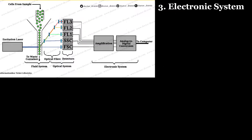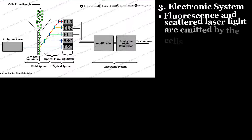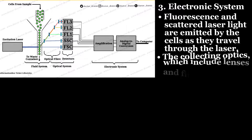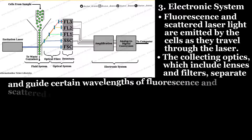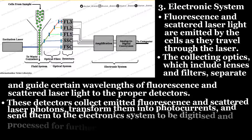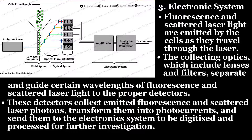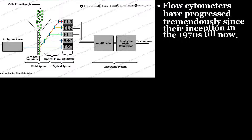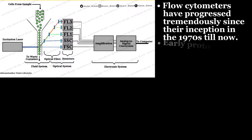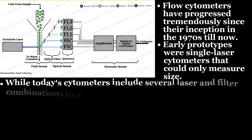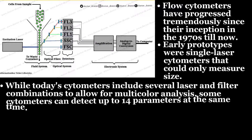Number three, the electronic system. As cells travel through the laser, fluorescence and scattered laser light are emitted. The collecting optics, which include lenses and filters, separate and guide certain wavelengths of fluorescence and scattered laser light to the proper detectors. These detectors collect emitted fluorescence and scattered laser photons, transform them into photocurrents, and send them to the electronic system to be digitalized and processed for further investigation. Flow cytometers have progressed tremendously since their inception in the 1970s — early prototypes were single-laser cytometers that could only measure size, while today's cytometers include several laser and filter combinations to allow for multicolor analysis.